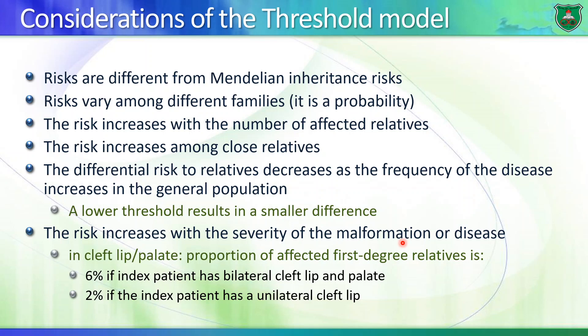The risk increases with the severity of the malformation. There is a 6% chance if one of the parents has bilateral cleft lip, versus 2% if one parent has unilateral cleft lip. The chance of developing a condition increases if the severity of that condition also increases in the parents or siblings.